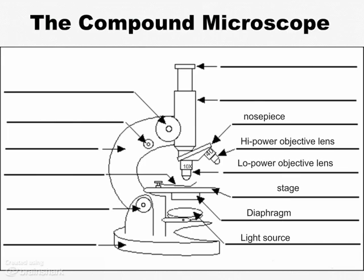In order to switch between the low and high power, we have a revolving nosepiece. This here is called the body tube — it's a length of tube that keeps the two lenses at a fixed distance from one another. The last lens that the image goes through is called the ocular lens, which is just a fancy way of saying eyepiece. All these parts make up what's called the light system of a light microscope.